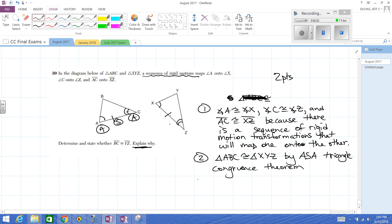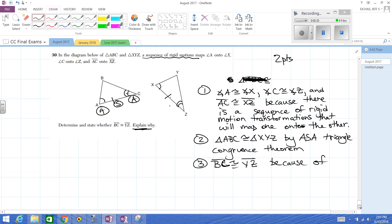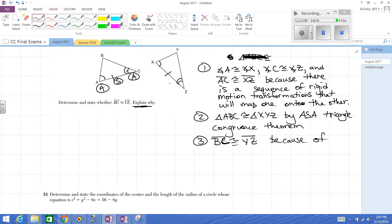Now BC is congruent to YZ because of, and you can probably get away with CPCTC, but I'm going to write it out because of corresponding parts of congruent triangles are congruent.